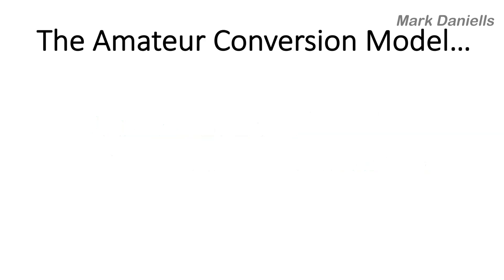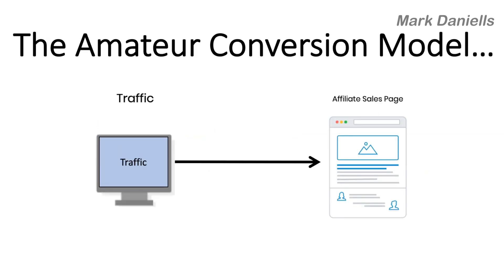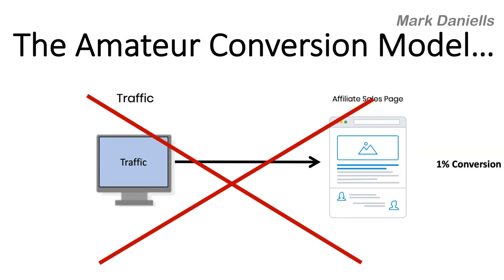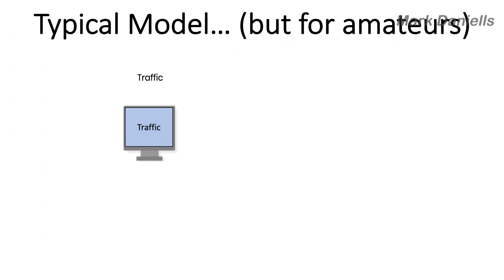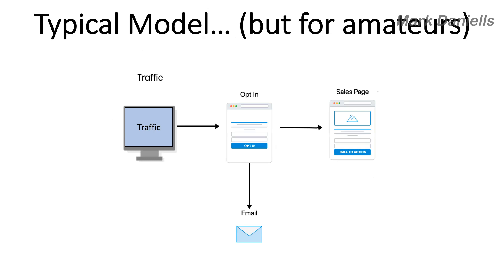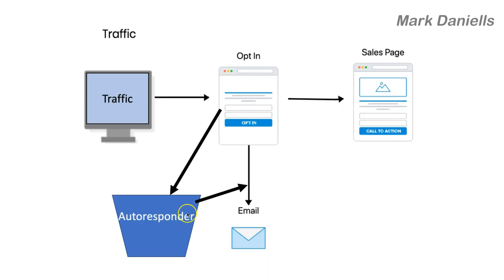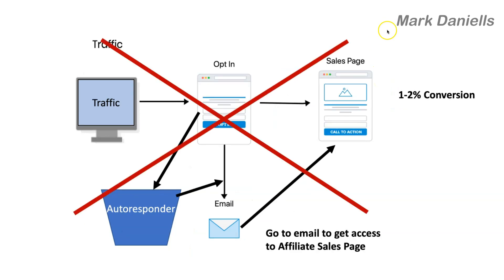The amateur conversion model: they take traffic and send it straight to the affiliate sales page. This is the worst thing you can ever do — the conversion rate is about 1% if you're lucky, and on top of that you are not collecting any emails at all from the traffic you're spending money on. A slightly better amateur model: you get the traffic and send it to the opt-in page — at least you're getting some emails — but then they send the prospect straight to the sales page, which is still bad: conversion is only 1–2%.